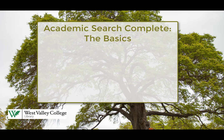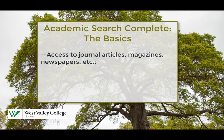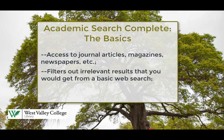In this video, we're going to review one place where you can get articles for your research project. Academic Search Complete is a database accessible from the library's website containing journal articles, magazines, newspapers, and several other information resources. Your instructors may have recommended using Academic Search Complete because it filters out irrelevant results you might get in a generic search of the web and provides content that can be trusted to use for your research projects.